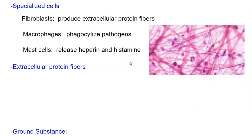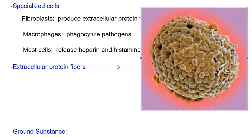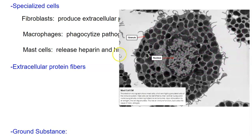We also have mast cells. Mast cells release heparin and histamine. Looking at a picture of a mast cell, you can see granules inside that contain the heparin and histamine. If an immune response is initiated, these mast cells will degranulate — releasing those granules — and heparin and histamine will go into the surrounding tissue. Heparin is a blood thinner, also used as a medication. Histamine causes itching and is part of the immune response.